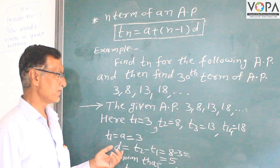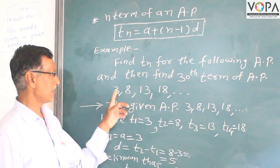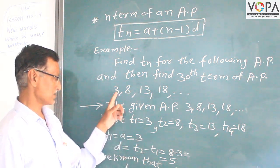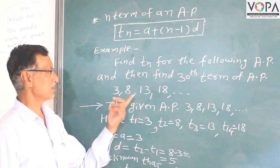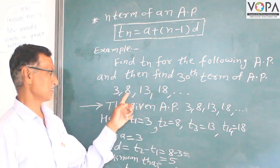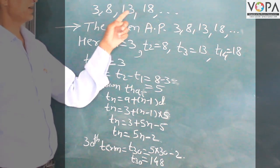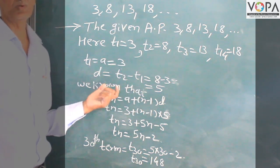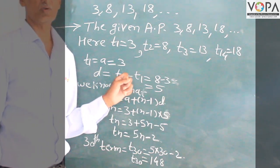The common difference d is the difference between two consecutive terms. t2 minus t1 equals 8 minus 3, which is equal to 5. The difference between the third and second term: 13 minus 8 is equal to 5. Similarly, 18 minus 13 is equal to 5. The difference between two consecutive terms is constant. This constant is called d, the common difference.